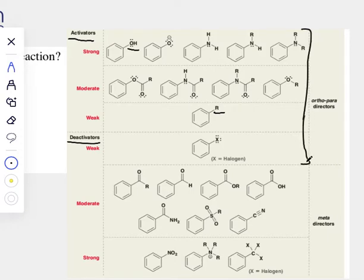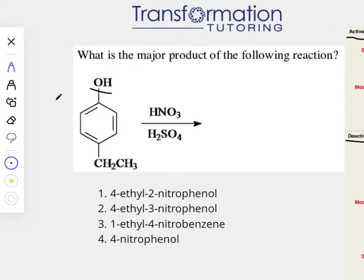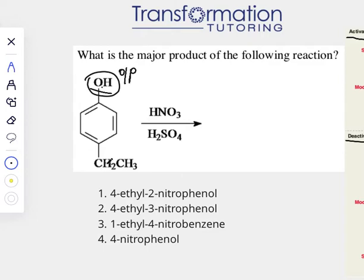We can also see from the chart that OH is an ortho/para director — all of these groups listed are ortho/para directors. So let's go back and see where the ortho and para positions are relative to the OH group on the benzene ring. The alcohol group is the one we're paying attention to because it's the strongest activator out of the two groups present. Since this is an ortho/para director, the para position is directly opposite the OH — but that position is already taken, so it's impossible to attach our NO2 there.